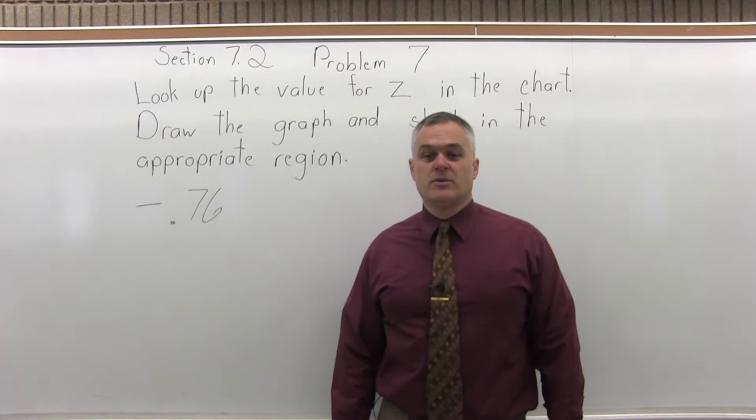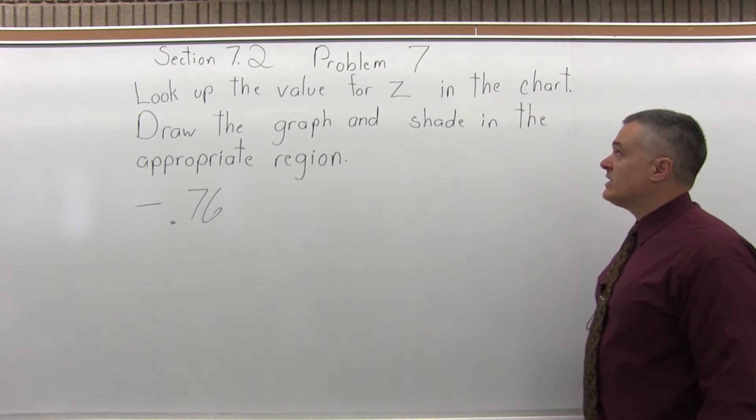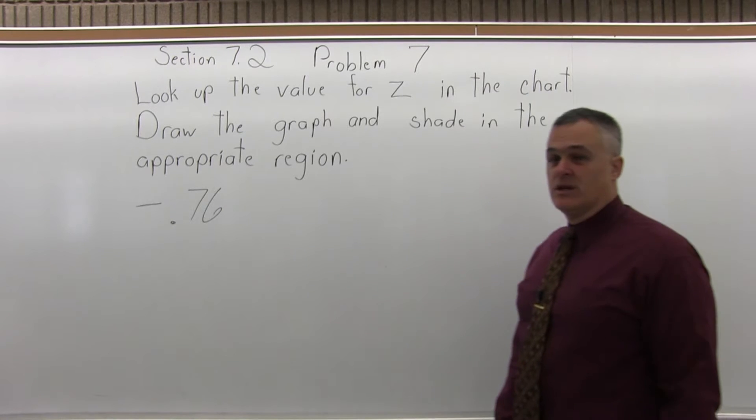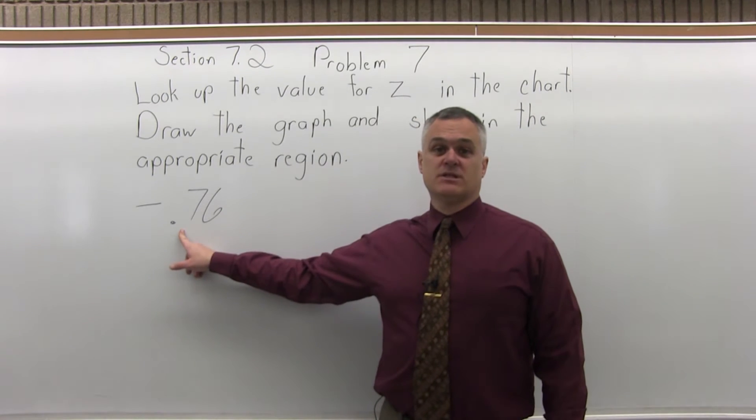This is Section 7.2, Problem 7. It says look up the value for z in the chart, draw the graph, and shade in the appropriate region. And the value we have to look up is negative .76.